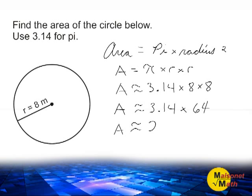3.14 times 64 is 200.96 square meters, and that is the area of the circle shown.